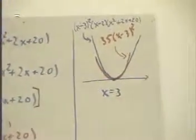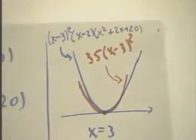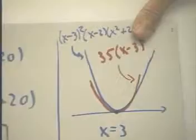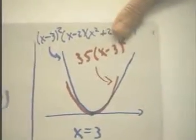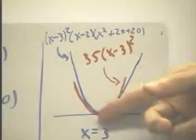The implications for the graph are as follows. In the first place, this new function we have, 35(x-3)², is just a parabola.